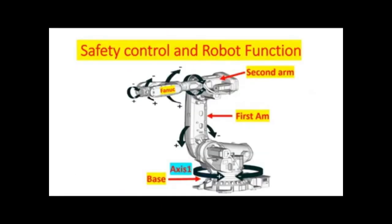This is axis number one located at the base of the robot and it allows the robot to rotate from left to right and it can rotate 180 degrees from the center.